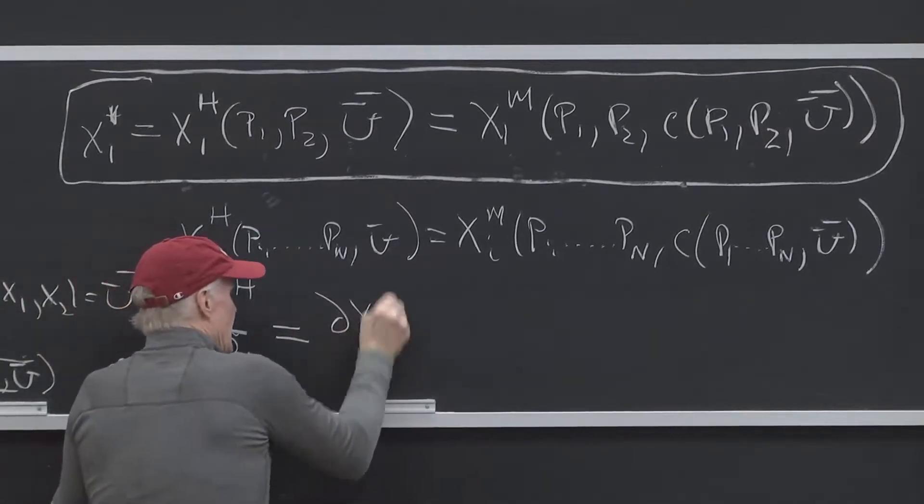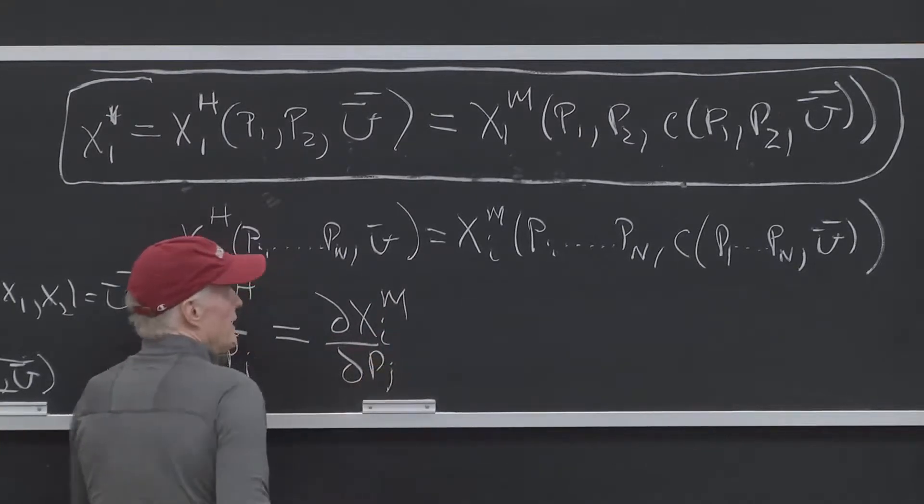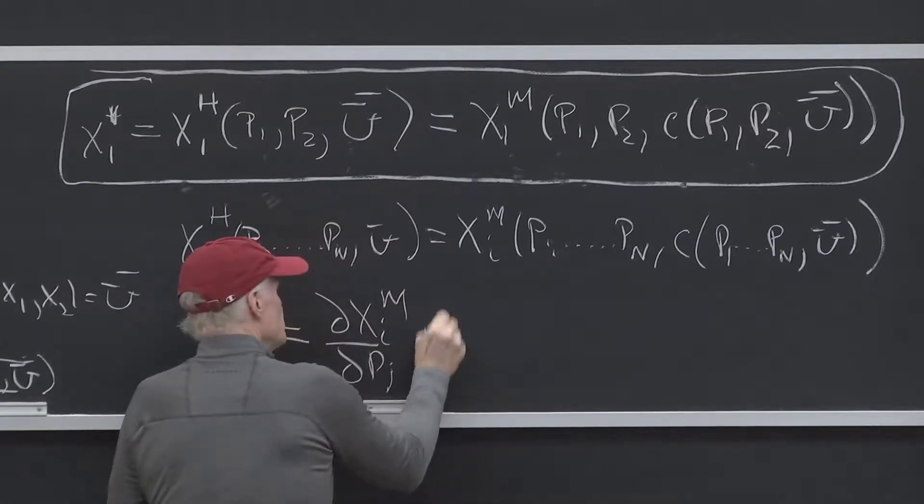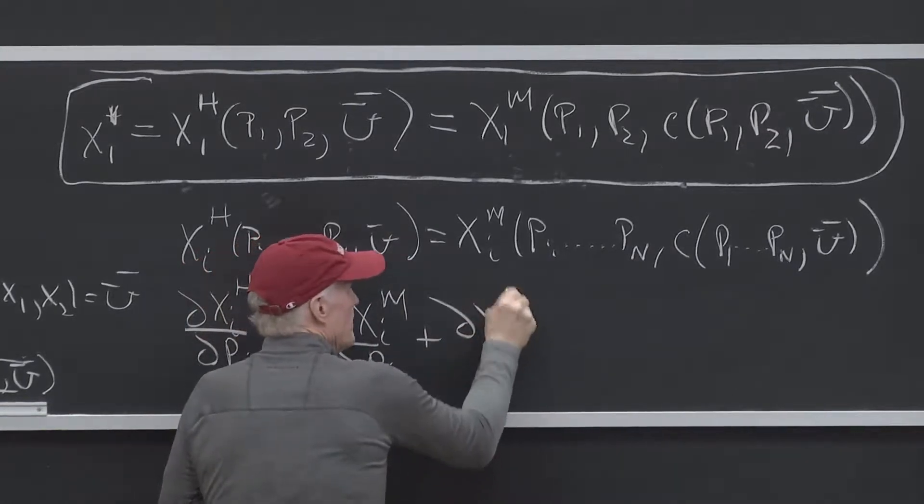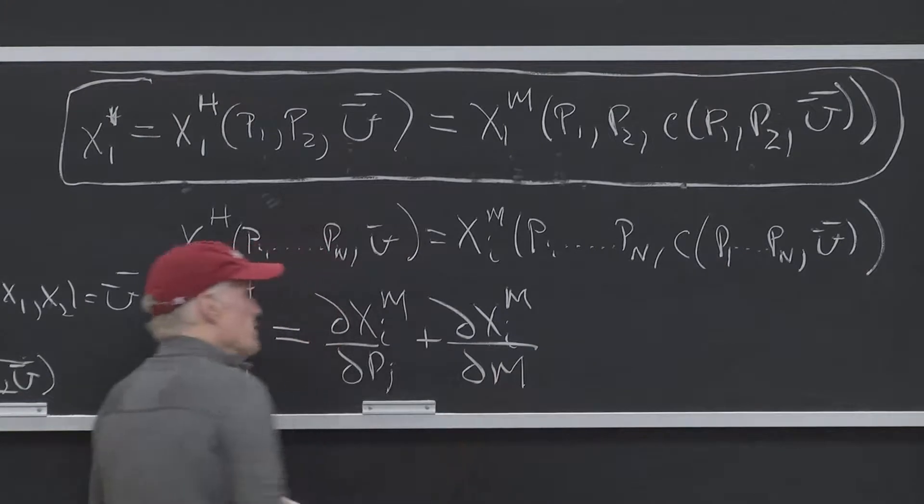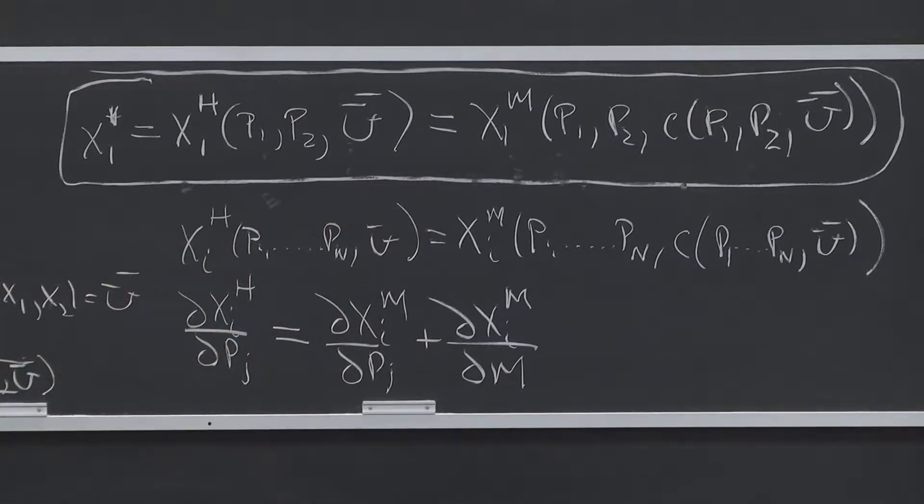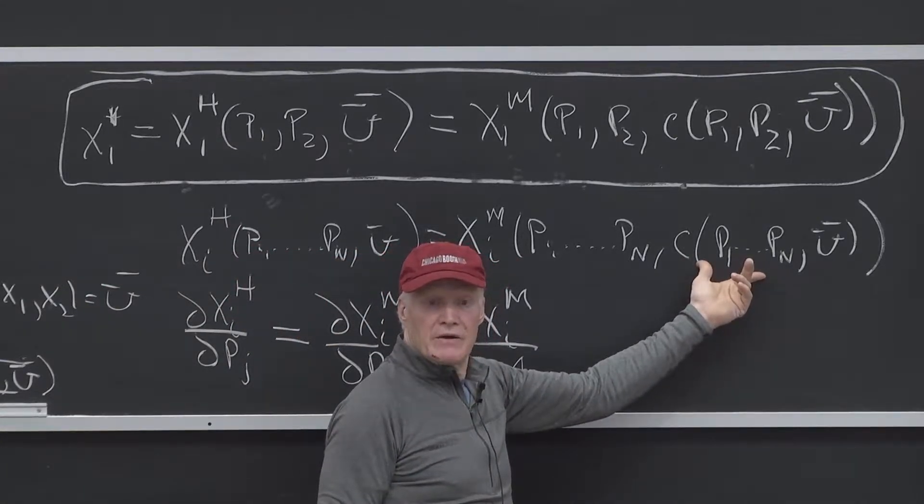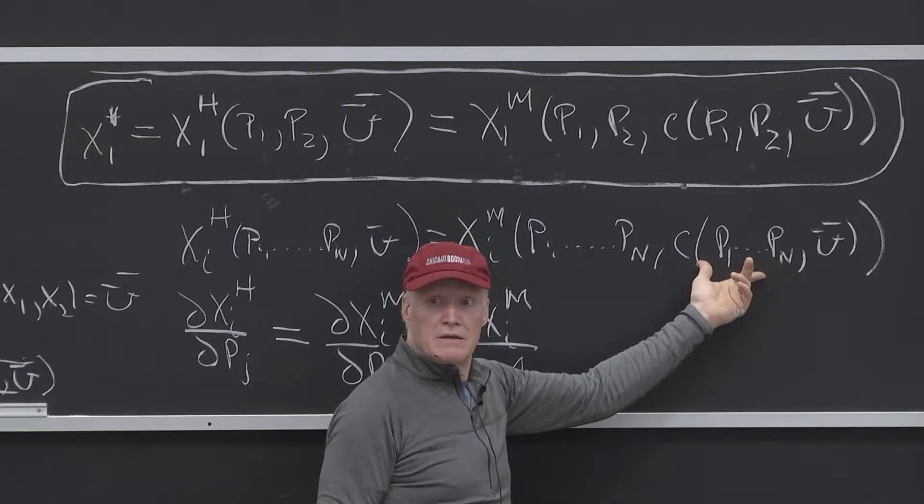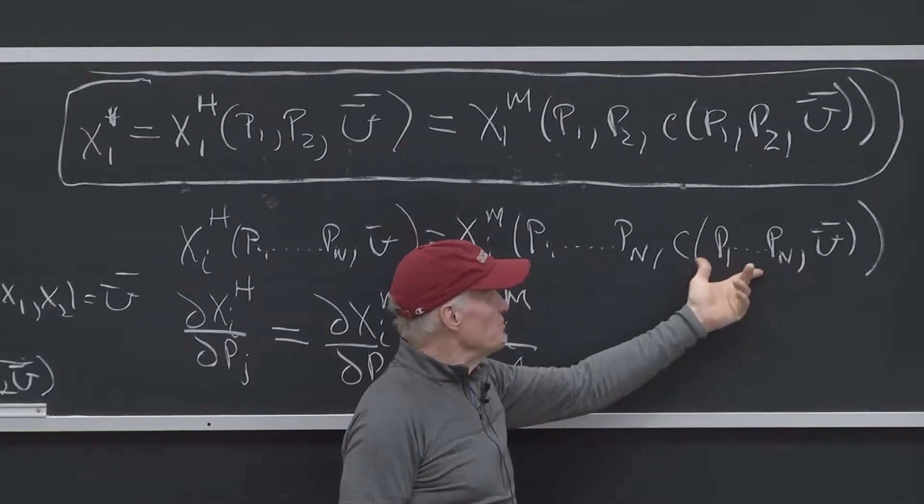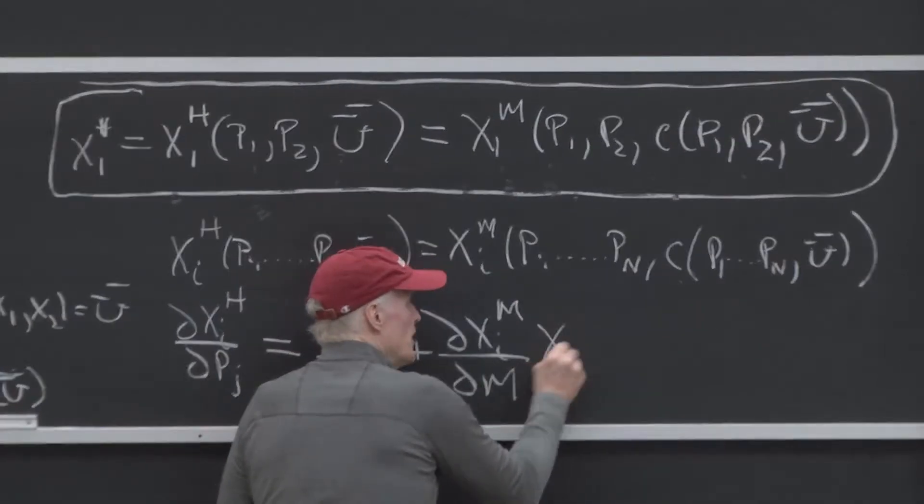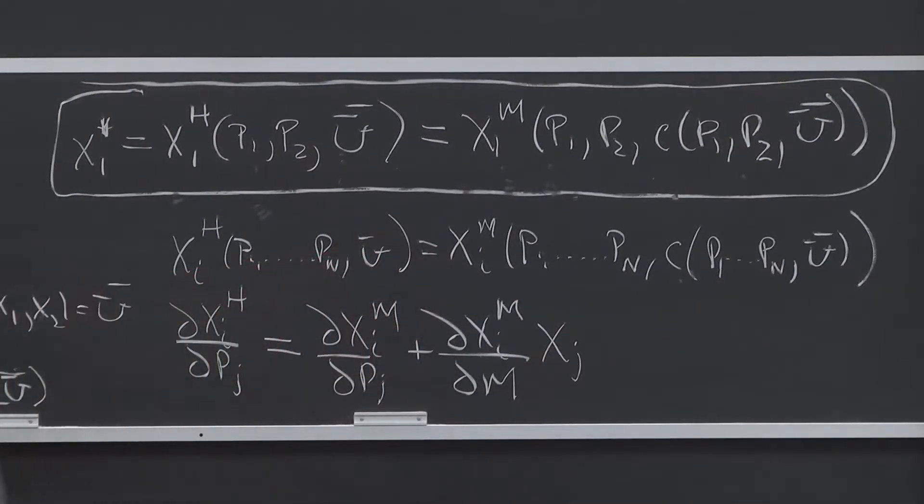Partial XIM partial PJ, that's because PJ shows up here, plus partial XIM partial M, that is the derivative of the Marshallian demand curve with respect to income, times the derivative of the cost function with respect to the price of good J, which is what? What's the derivative of the cost function with respect to the price of good J? It's the quantity of good J.